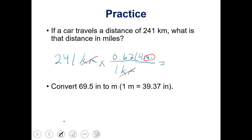Put this into your calculator. We do not use the conversion factors when determining how many significant figures we should have, so all we're given in the problem is 241 kilometers — therefore we can only have three significant figures in our answer. It comes out to 150 miles. I can put the decimal here to indicate that the zero is significant.